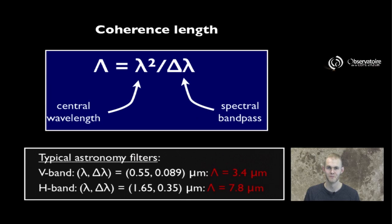If you do the same application in the H band, so somewhere around 1.6 microns, which that filter has a slightly larger bandpass, you will end up with a coherence length of about 7.8 microns.